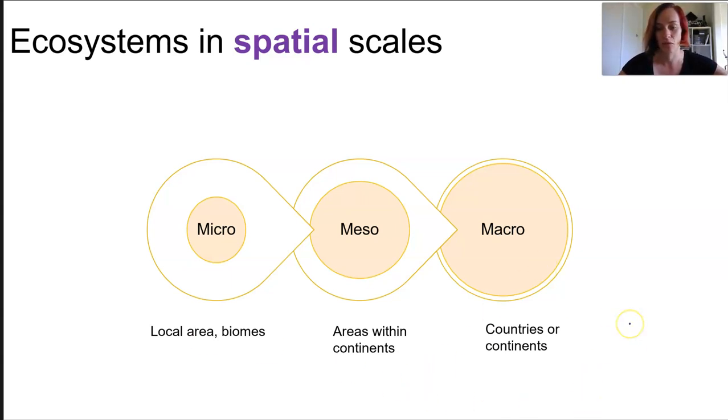At a bigger picture level, we assume that ecosystems are represented by the quadrats or whatever we're doing. If we're looking at an entire macro ecosystem, we have to assume that all of the micro ones collectively are representative of the macro ecosystem.